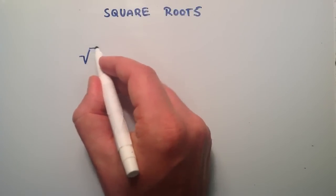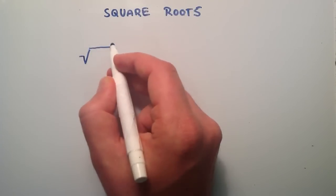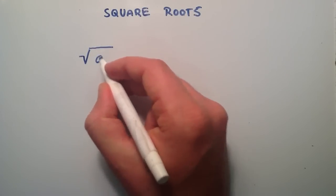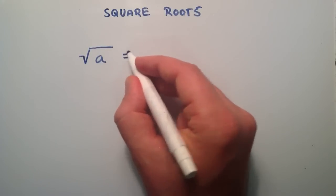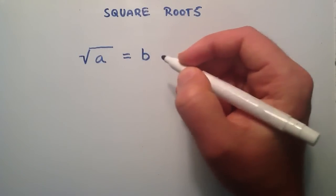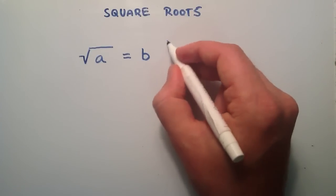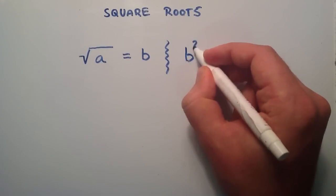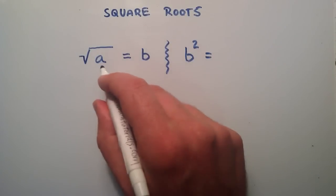For a square root, we have a radical sign, and underneath the radical sign we have some number that we call the radicand. We say that the square root of a is equal to some number, we'll call it b. What that means is that our answer b, if we square it, is going to give us a.